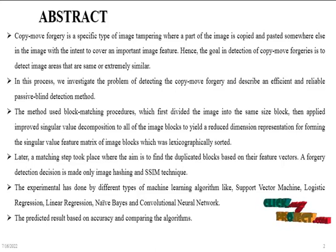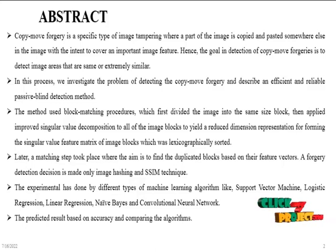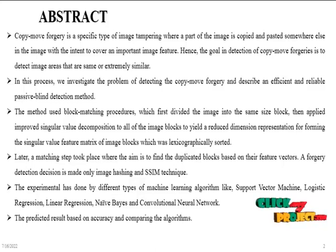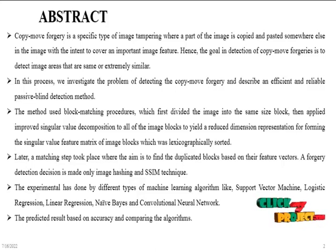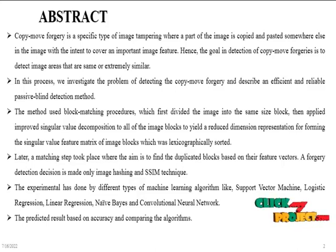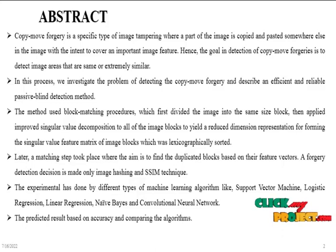In this process we investigate the problem of detection of copy move forgery and describe an efficient and reliable passive blind detection method. The method uses block matching procedures which first divide the image into small blocks, then apply improved Singular Value Decomposition to all image blocks to yield their reduced dimension representation, forming the singular value feature matrix of image blocks which is lexically sorted. A matching step then finds duplicated blocks based on their feature vectors, and a forgery detection decision is made using an SSIM technique.